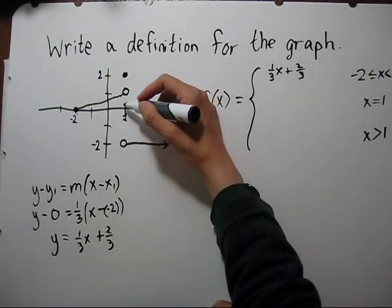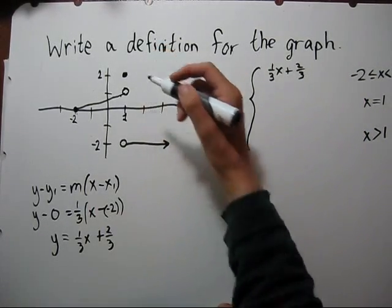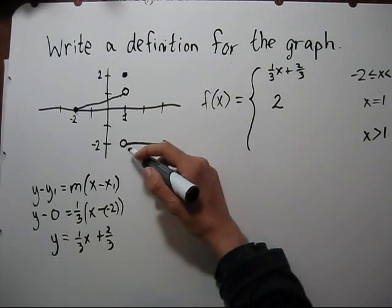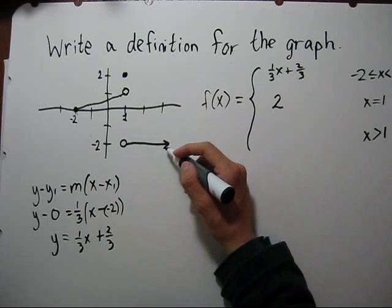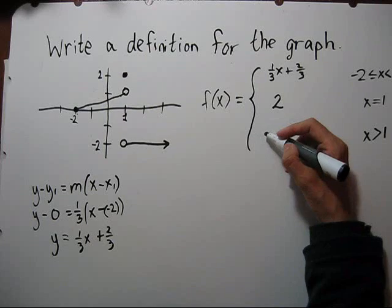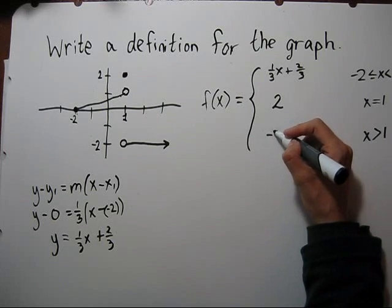At x equals 1, the value is 2, so we just put a 2 there. And then for x greater than 1, we have a horizontal line. The y value is fixed, so this is going to be a y equals negative 2.